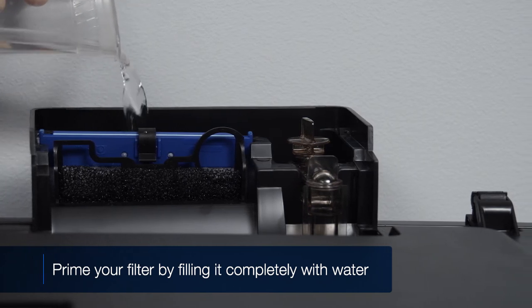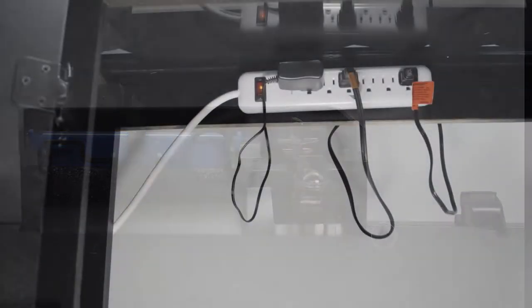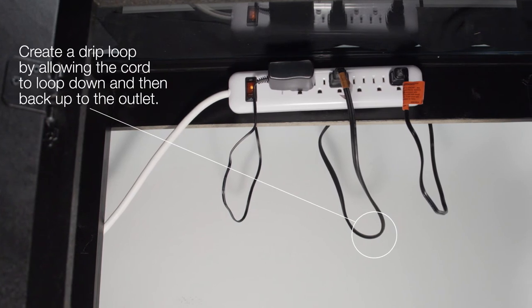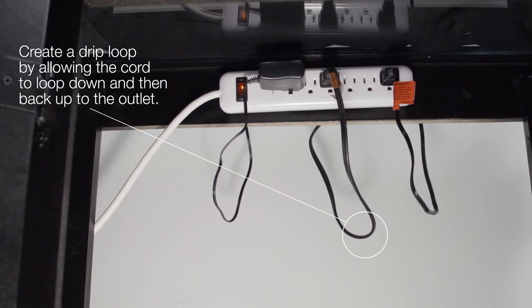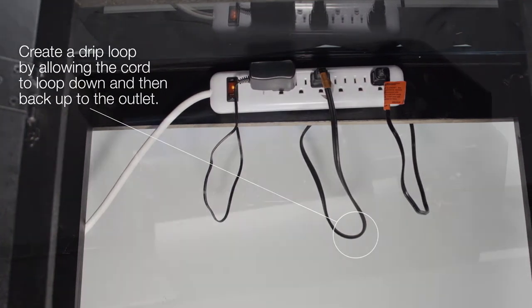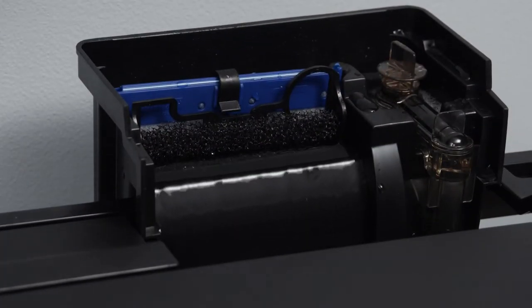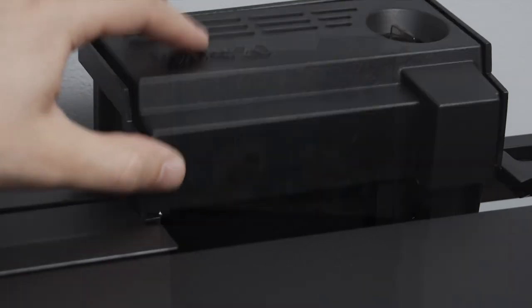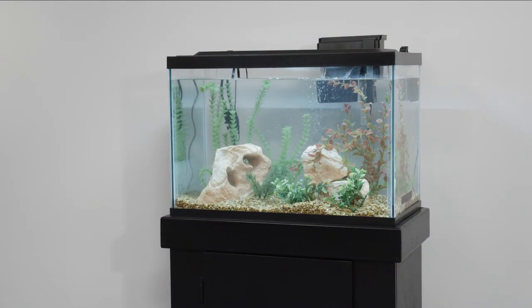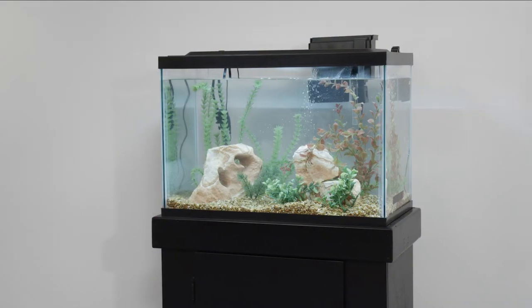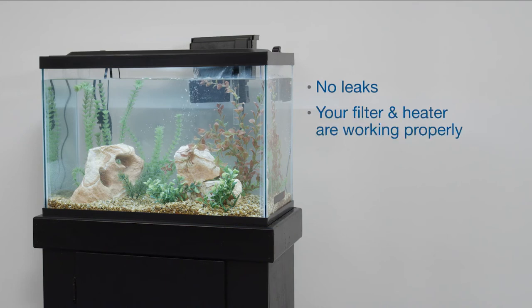You can now plug in your equipment. To prevent water from flowing into your power strip or outlet, be sure to create a drip loop with your power cord. Once all your equipment is plugged in, and you see your filter is running, place the cover back on, and allow your aquarium to run for 24 hours to make sure there are no leaks and things are working properly.